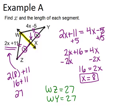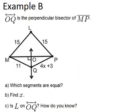Okay, let's go to example B. In example B, it says line OQ is the perpendicular bisector of MP.